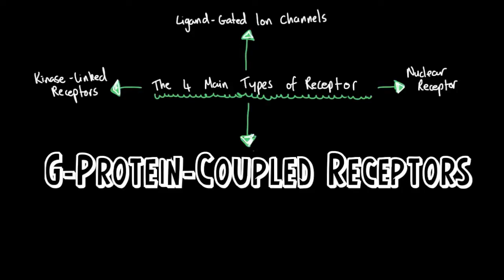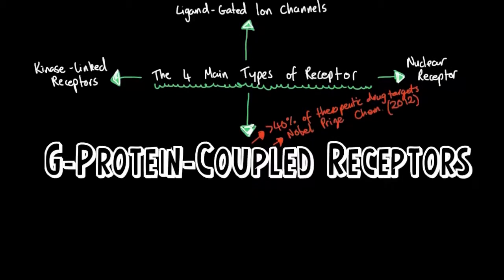Before we get stuck in, let me tell you two fun facts about GPCRs. They are the target of over 40% of therapeutic drugs, and secondly, they helped two guys win the Nobel Prize in Chemistry last year.